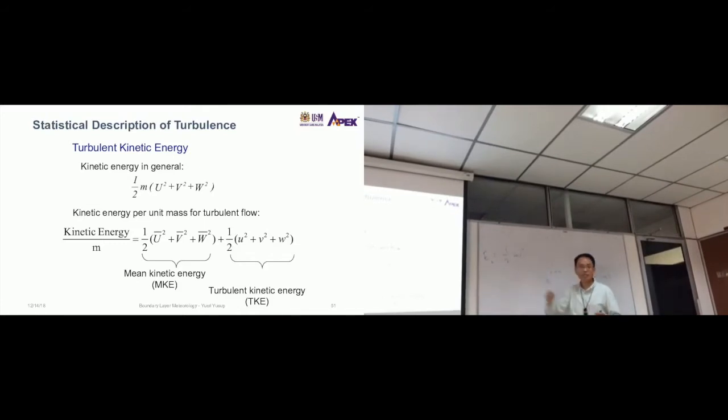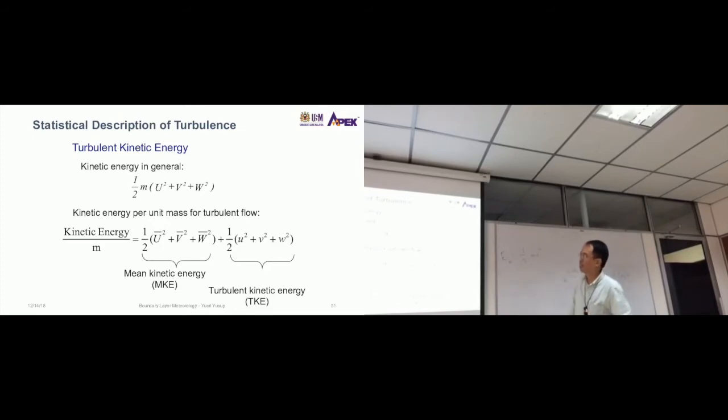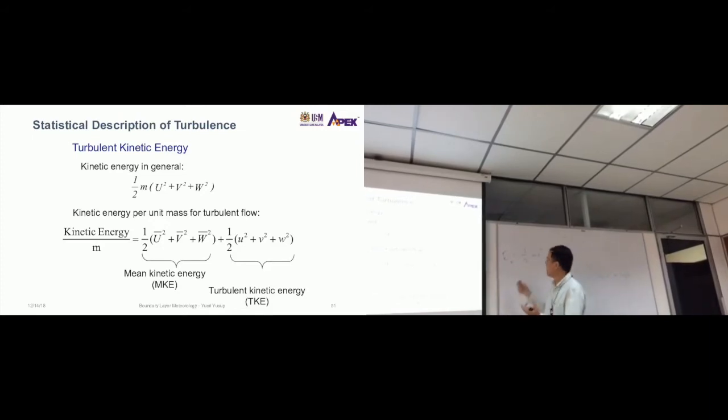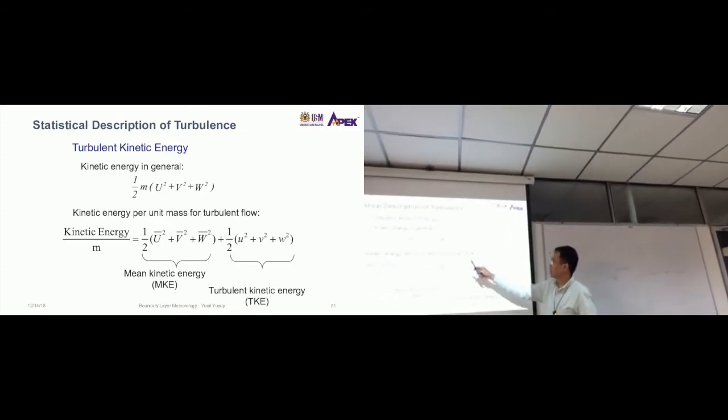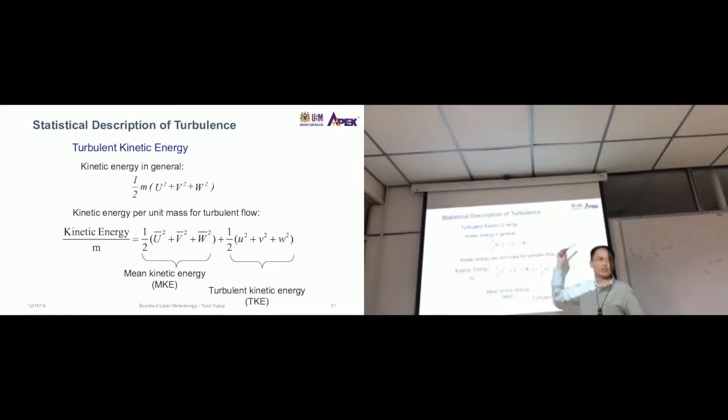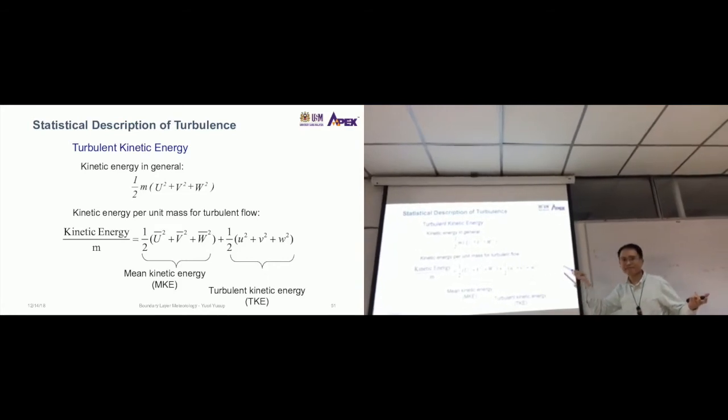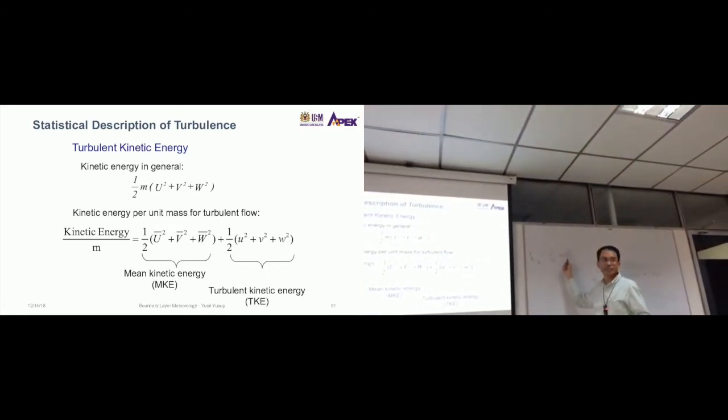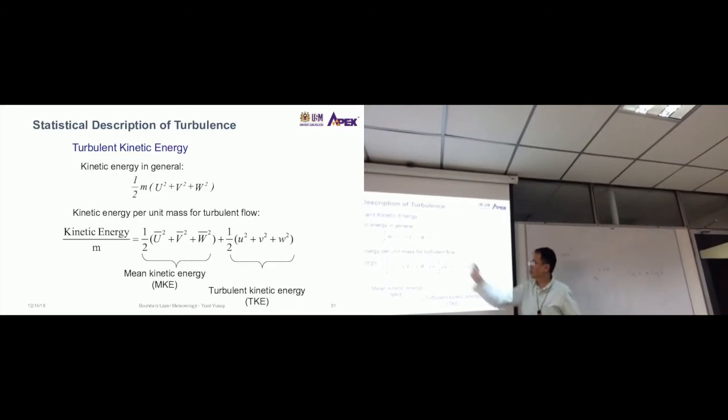But in turbulence, there's three directions. So to extend this to turbulence, you just need to account for all three components. So it's just an addition of this. It's half m and u squared plus v squared and w squared as all. Now, this is just for one component. This is for all three components.